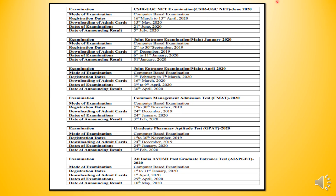Alright, now for June 2020 — the next cycle — forms will be filled from 16 March to 15 April. You can download the admit card on 15 May. The examination will be on 21 June, and on 5 July 2020 your result will come.